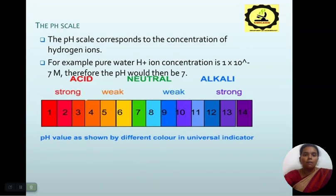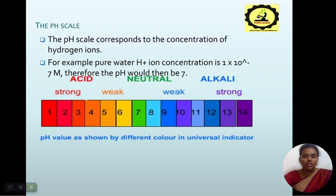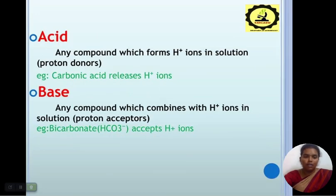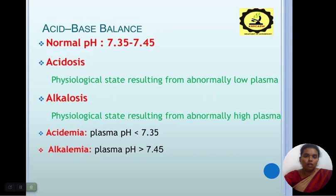pH 7 is neutral, 1 to 6 is acidic, and 8 to 14 is basic. For example, pure water has an H+ ion concentration of 1×10⁻⁷ M, so the pH of water is 7. Strong acid is pH 1 to 3, weak acid pH 4 to 6, neutral pH is 7, weak base is pH 8 to 10, and strong base is pH 11 to 14. An acid is any compound which forms H+ ions in solution — that is, a proton donor — for example carbonic acid, which releases H+ ions.